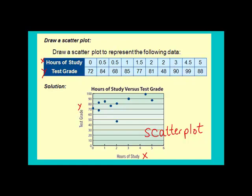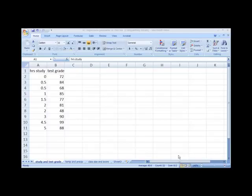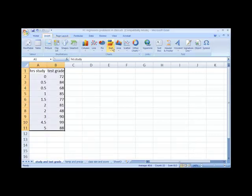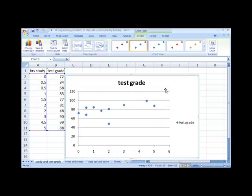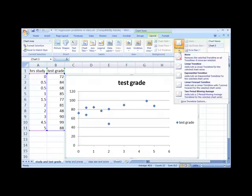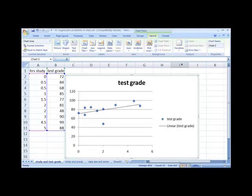Excel does this for you. To make this scatter plot, once you have an Excel document open with data in there, click on Insert, Scatter, and it comes up. If you want to see the trend line, the best fit line, click under Chart Tools, Layout, Trend Line, Linear Trend Line.